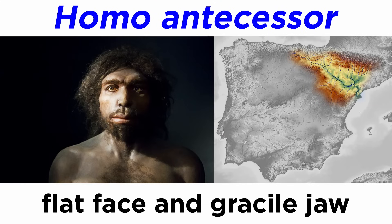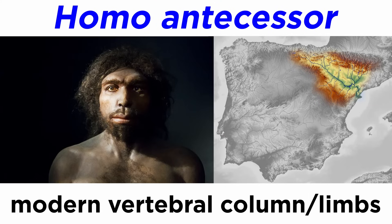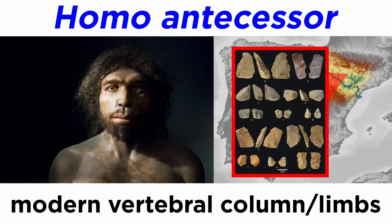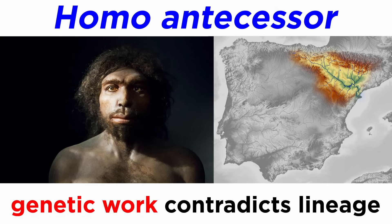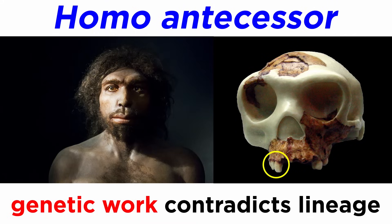The face is extremely flat, and the jaw is considered to be quite gracile. The vertebral column and limbs are very much like modern humans as well, and the technology found at the sites are par for the course. However, genetic work may have ousted this hominin from our lineage to an offshoot. Proteins collected from one of the teeth appear to remove it from the human line, and paleoanthropologists have pointed out that the morphology additionally prevents a throughline.